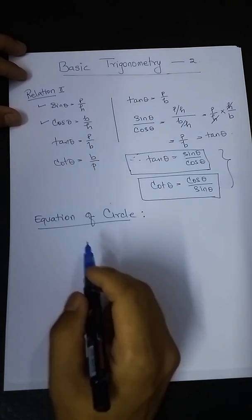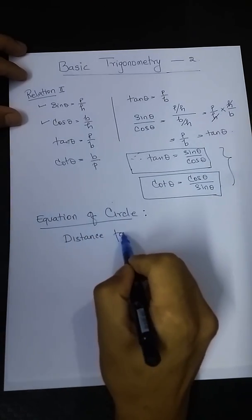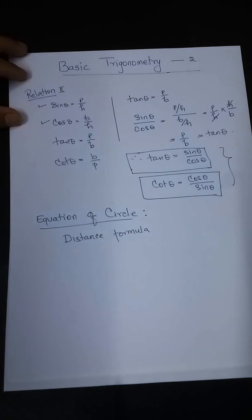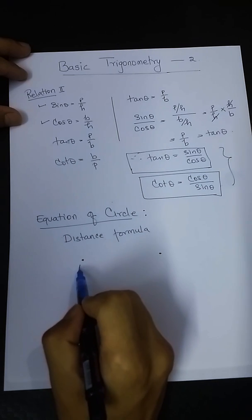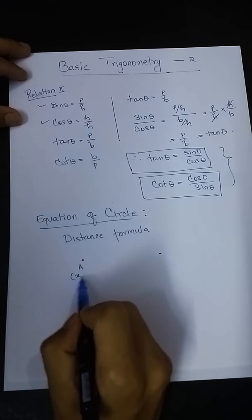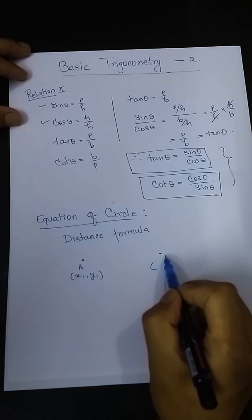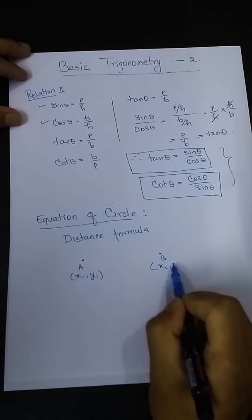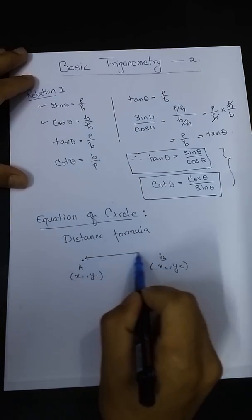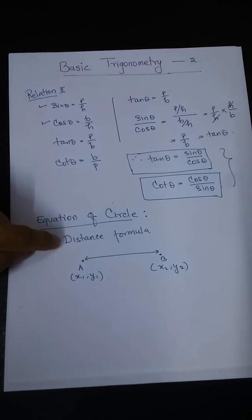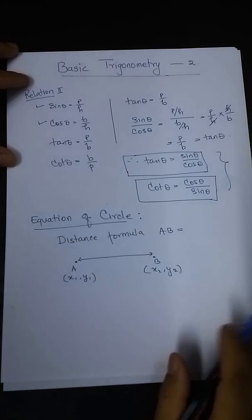I will show you how to report the distance formula. The distance formula — we have a point here and a point here, with coordinates. Point A is x1, y1 and point B is x2, y2. So I mean the distance formula from A to B.